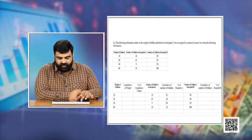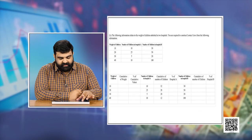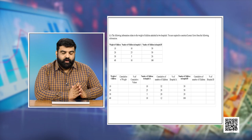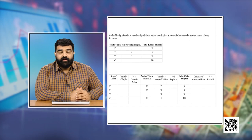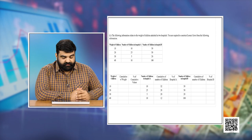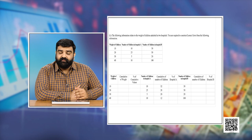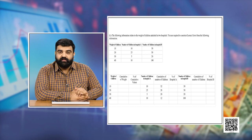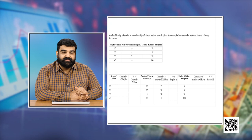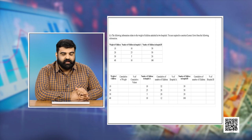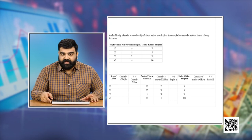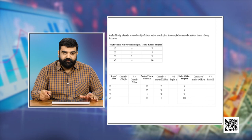Now let's practice drawing the Lorentz curve. The first question deals with children whose weight has been recorded in two hospitals. We have weights of children as 10, 20, 30, and 40, and their frequencies in Hospital A and Hospital B.